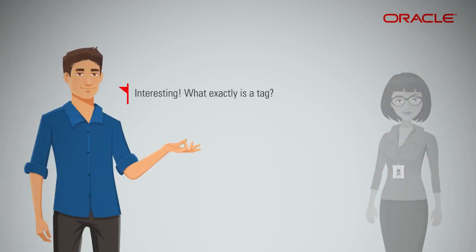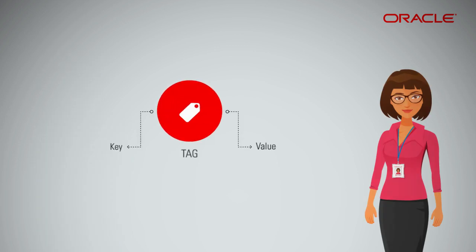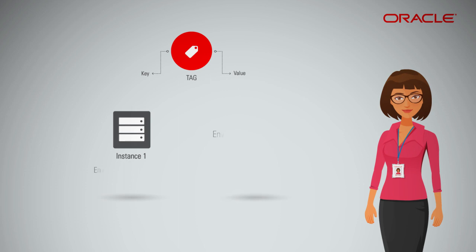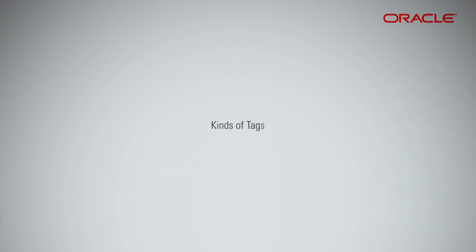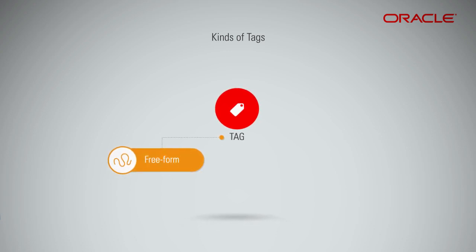What exactly is a tag? A tag is a key and a value. Consider an instance where 'environment' is the key and 'production' is the value. In the Oracle Cloud Infrastructure Tagging System, the key and value are strings without any constraints, which is supported with freeform tags.